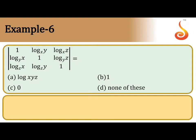Example 6. The determinant has entries: 1, log y to the base x, log z to the base x in the first row; log x to the base y, 1, log z to the base y in the second row; log x to the base z, log y to the base z, 1 in the third row. This is equal to how much?